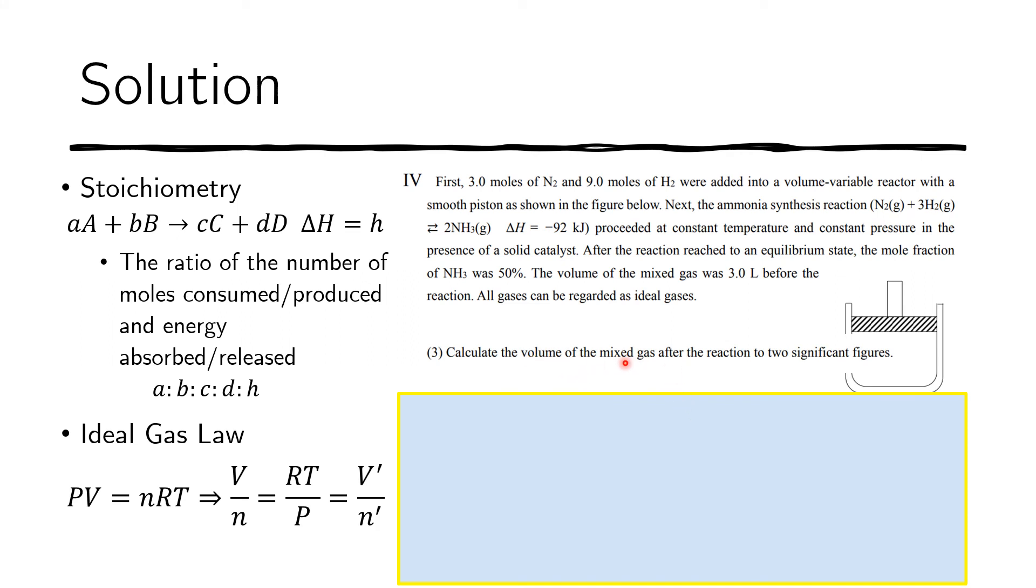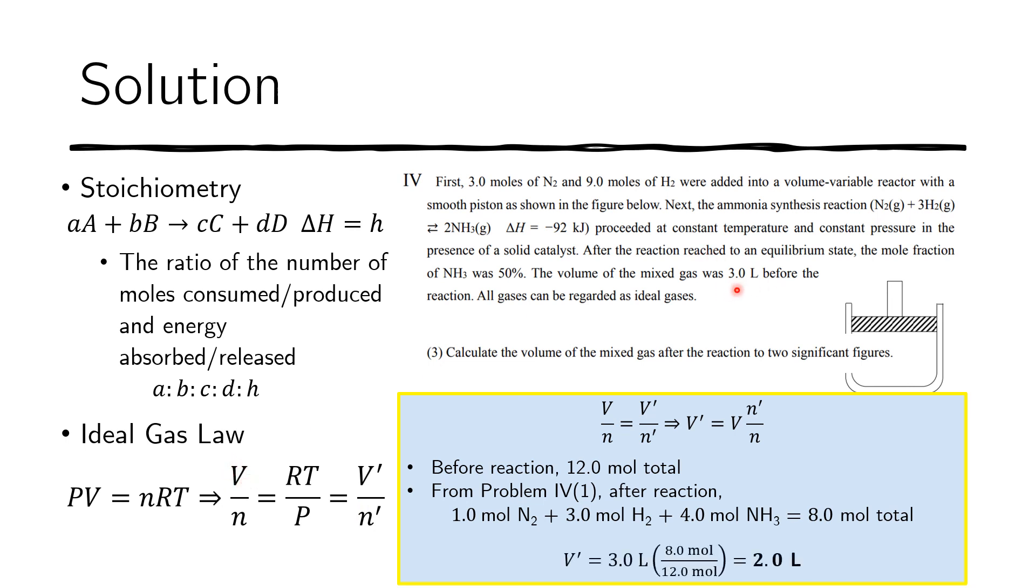Now we're going to look for the volume of the mixed gas after the reaction. This relationship comes in handy: V over N, the ratio of the volume to the amount of moles before the reaction is the same as the ratio after the reaction. What we're looking for is the volume after the reaction. Before the reaction we computed that there are 12 moles in total, and after the reaction there's 1 mole of nitrogen, 3 moles of hydrogen, and 4 moles of ammonia, which gives us a total of 8 moles. We're also given V before the reaction is 3 liters. We just substitute the values and solve, and we get that after the reaction there will be 2.0 liters of gas.